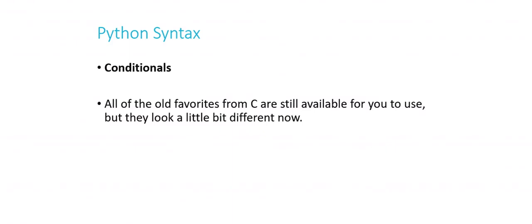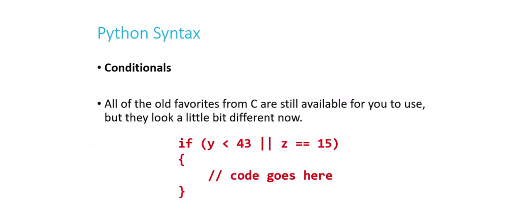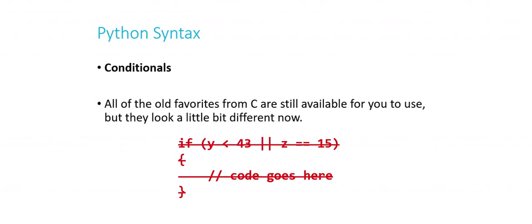Conditional statements from C are all available, but they look a bit different. In Python, instead of using two vertical bars for OR, you literally use the word 'or'. So instead of 'if (y < 43 || z == 15)', in Python it's 'if y < 43 or z == 15:' followed by indented code. There's no open curly brace — instead you use a colon. And all comments are introduced with the pound sign or hash mark.